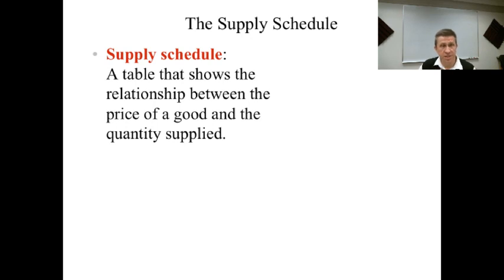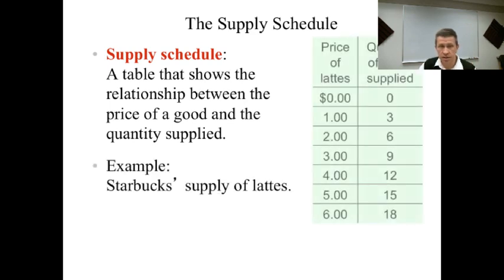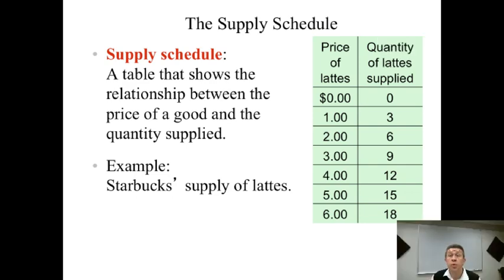So the supply schedule, it's a table or a chart that shows the relationship between the price of a product and the quantity that's supplied. So now let's look at how many lattes would Starbucks sell at any given price. That tells us the supply curve. So looking at this, at a price of zero, how many would Starbucks want to sell or how many would anybody want to sell? The answer is clearly zero. Firms aren't in this to give things away. Firms want to make money.